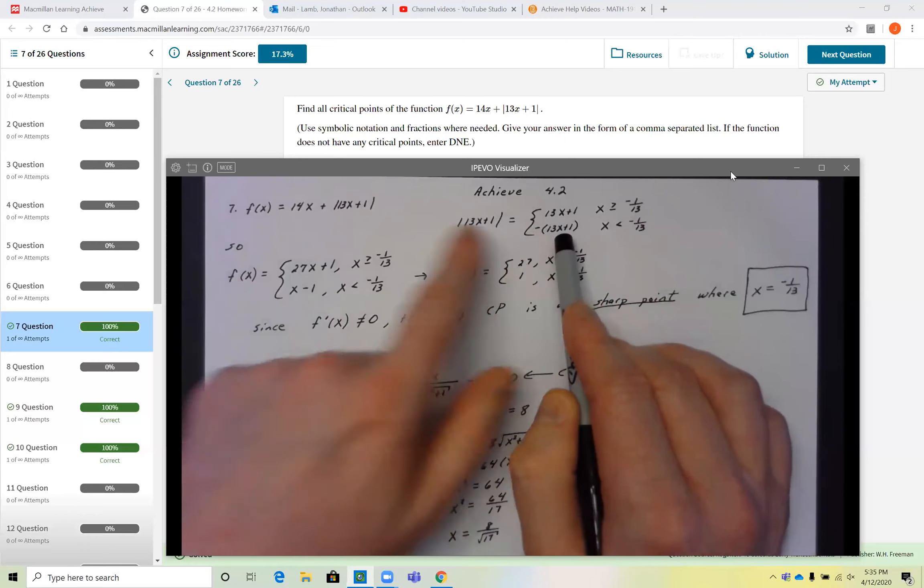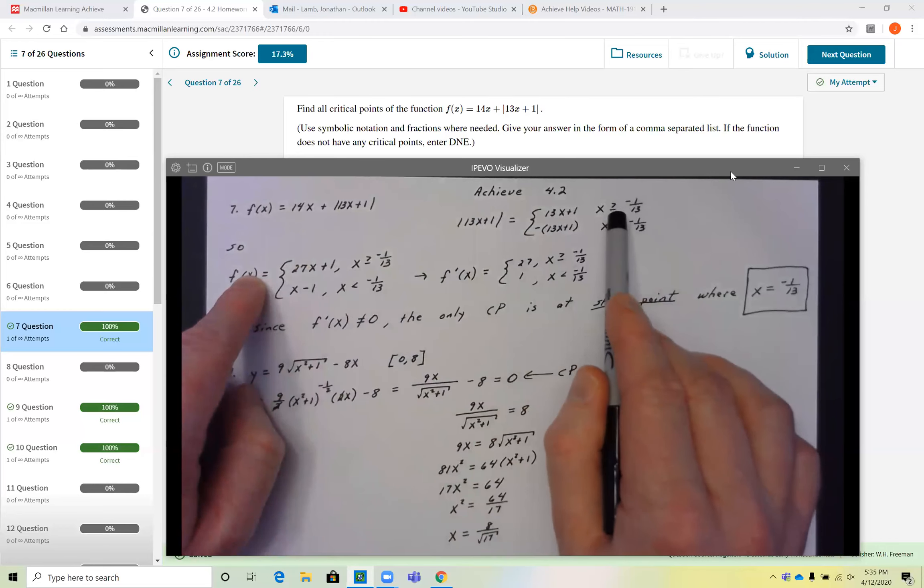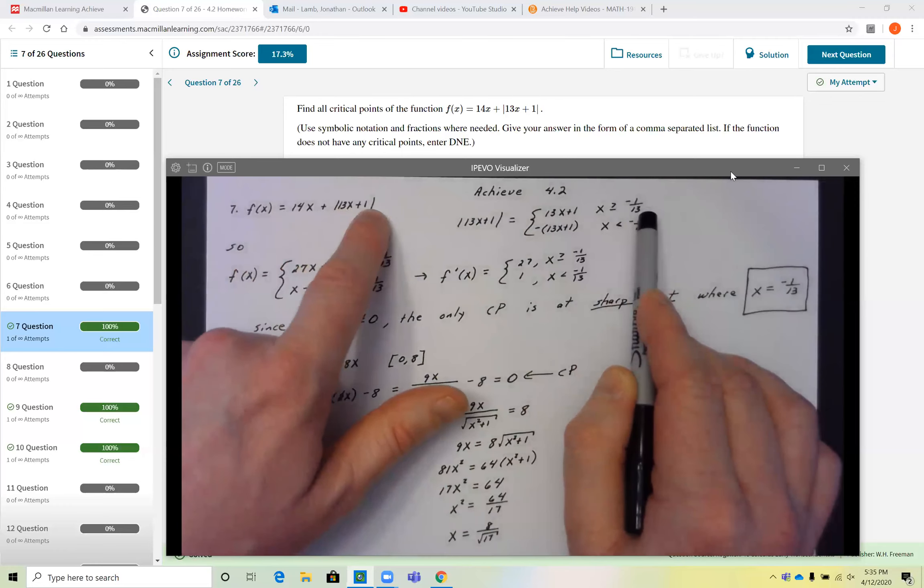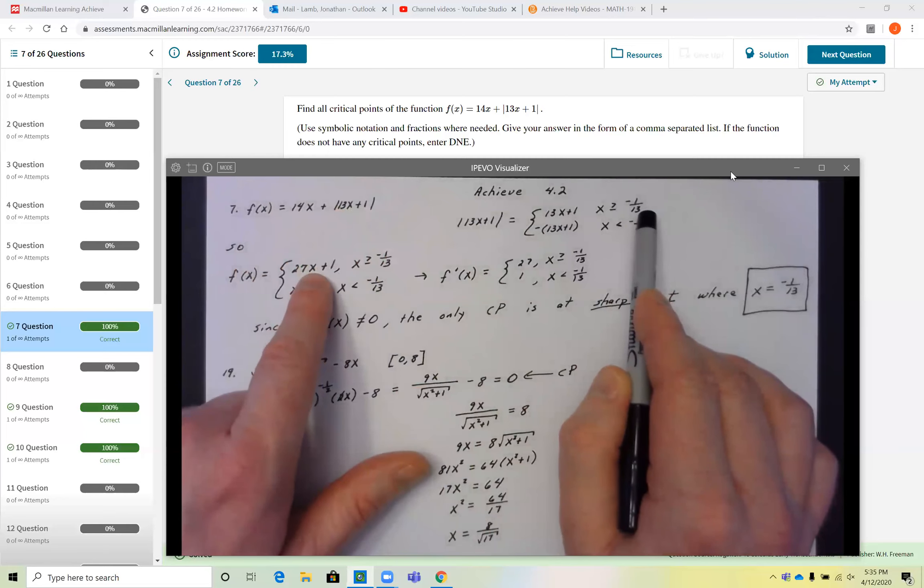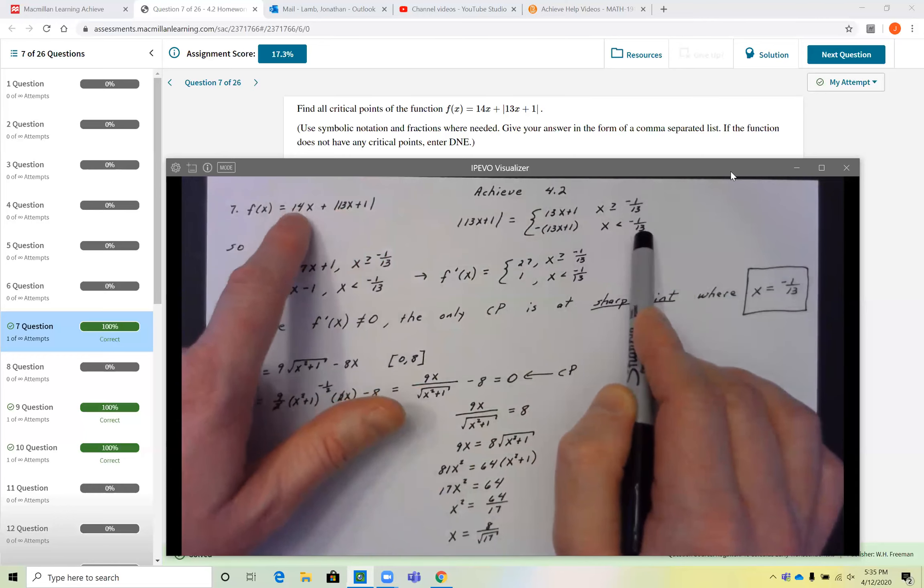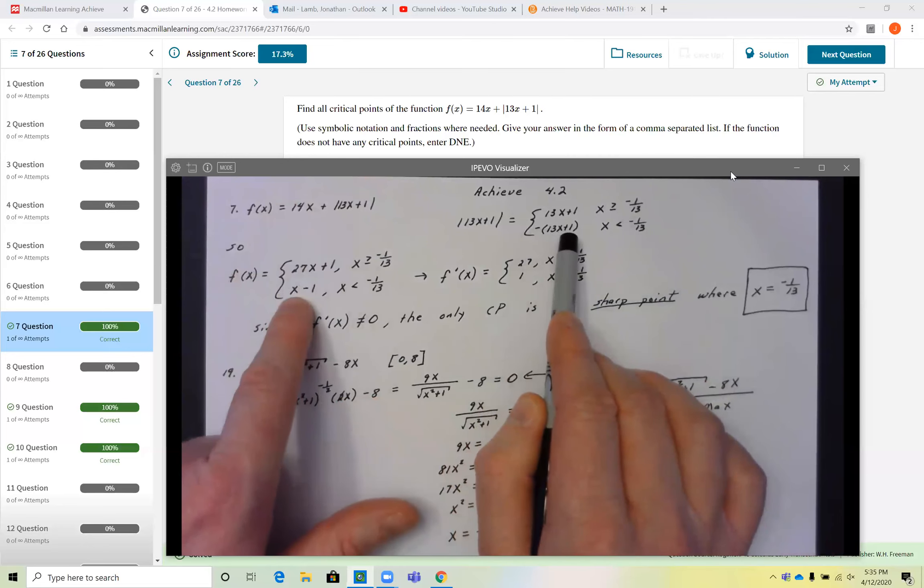Now that impacts the function f(x) as follows. Anytime x is a number greater than or equal to negative 1 over 13, my original function is just 14x plus 13x plus 1 or 27x plus 1. Anytime x is a number less than negative 1 over 13, my equation becomes 14x minus 13x plus 1, which gives me x minus 1.